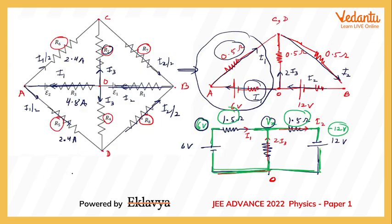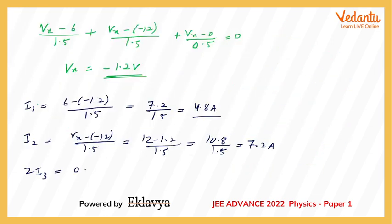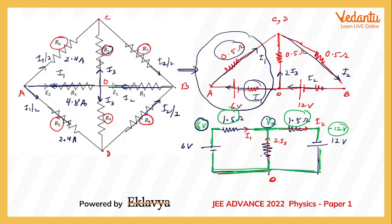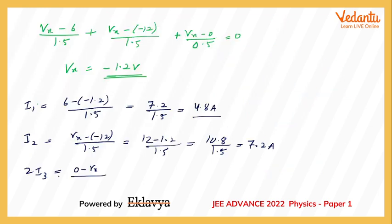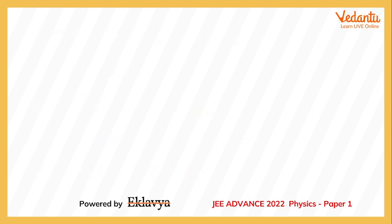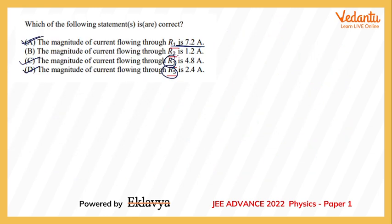For R2, the current in that branch is 2i3. So: 2i3 = (0 − Vx) / 0.5 = 1.2 / 0.5 = 2.4 A. Therefore i3 = 1.2 amperes. Checking the options, current through R2 is 1.2 A — confirmed correct.